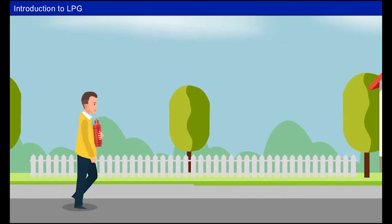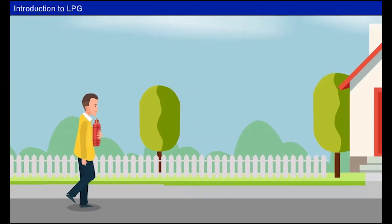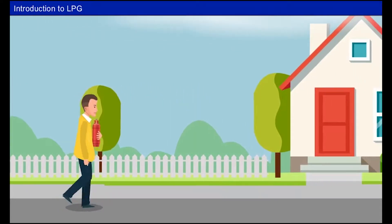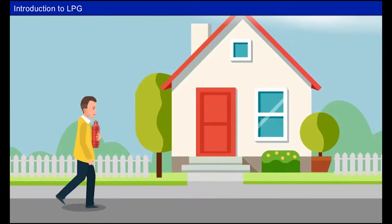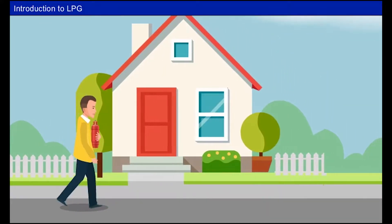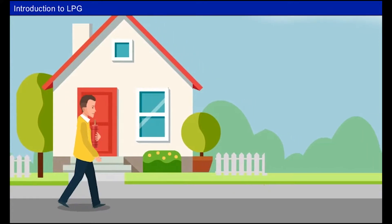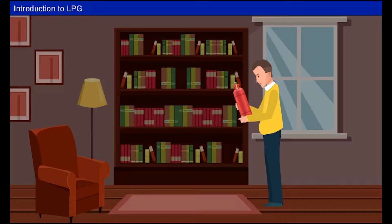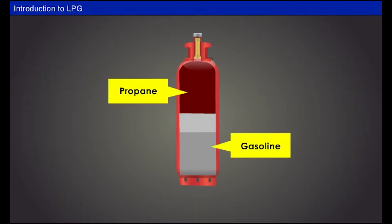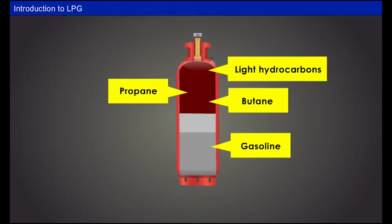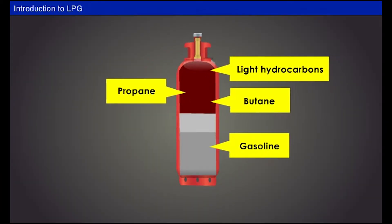It all happened when Dr. Walter O. Snelling, a chemist and explosives expert with the US Bureau of Mines, purchased gasoline and by the time he reached home, there was only half of it. Dr. Walter investigated gasoline to see why it evaporated so fast and discovered that the evaporating gases were propane, butane and other light hydrocarbons.